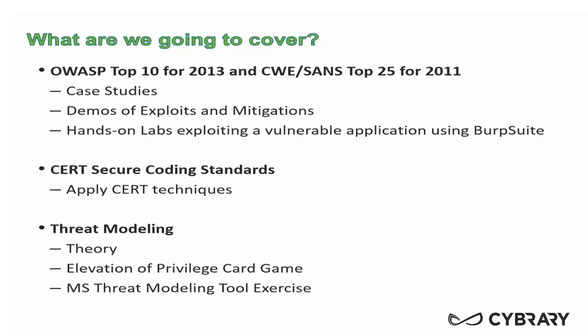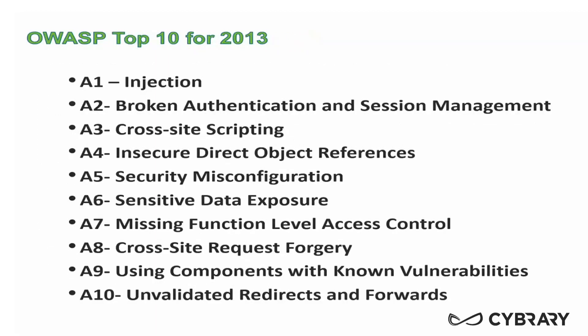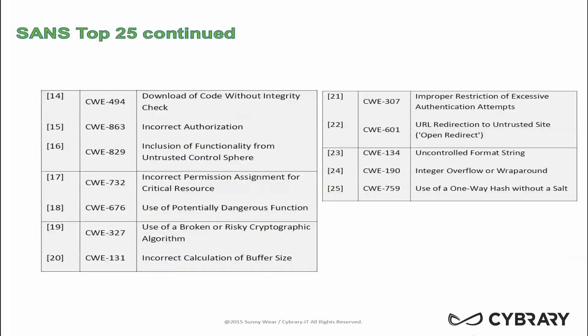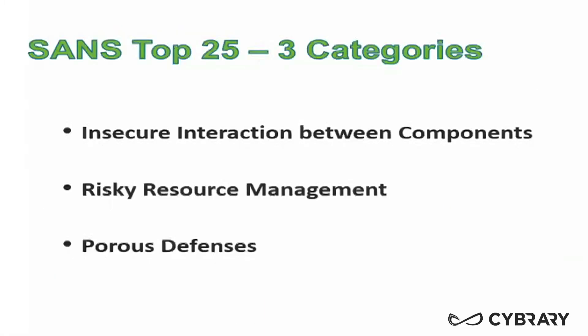And then we'll go into some threat modeling. The OWASP Top 10 for 2013 — we're going to go through this list extensively. And then the SANS CWE Top 25: basically, we are going to cover all of the categories that are not previously covered in the OWASP section. I'm listing them out here for your viewing, but realize we'll go into each one of these in depth in our material. There are three main categories that I've broken the material up into for the SANS Top 25: insecure interaction between components, risky resource management, and porous defenses.